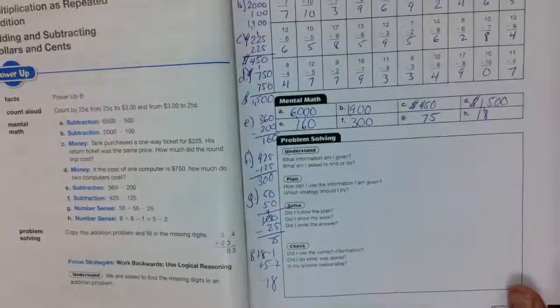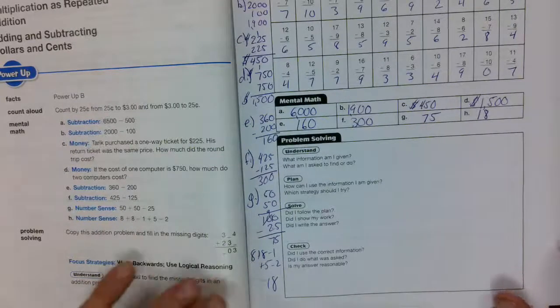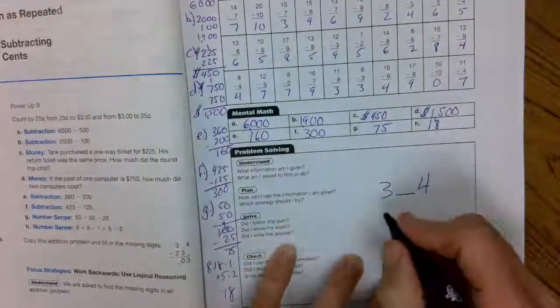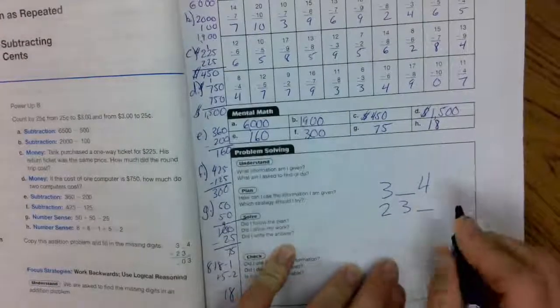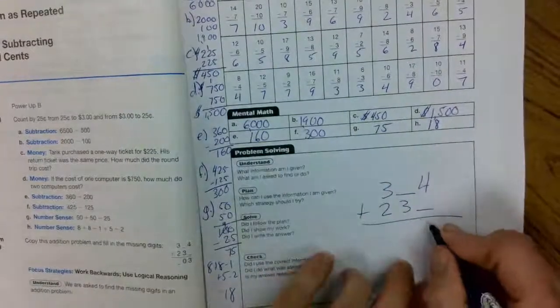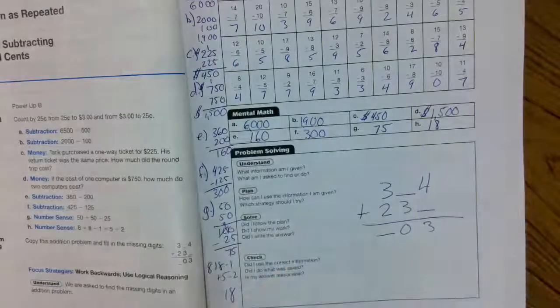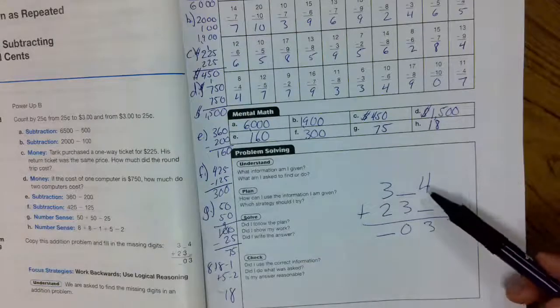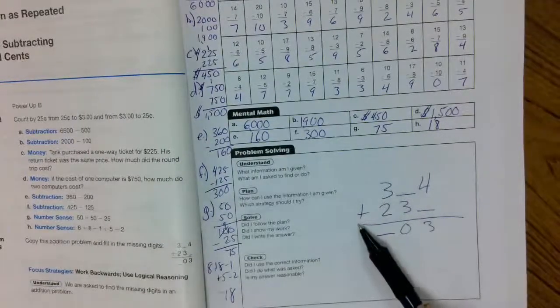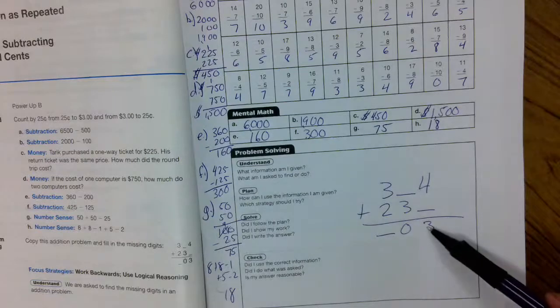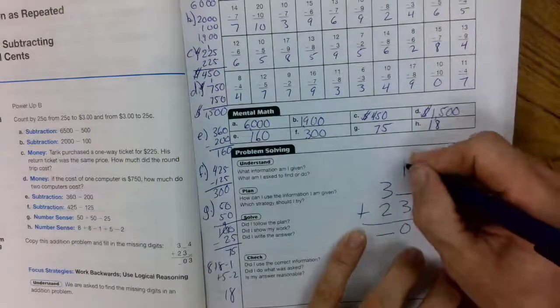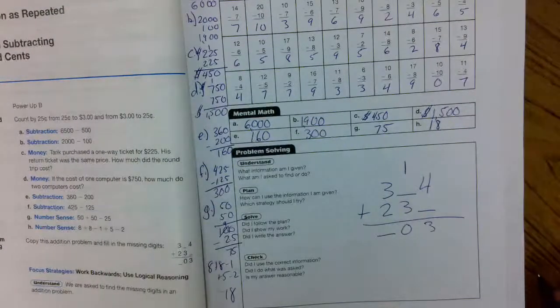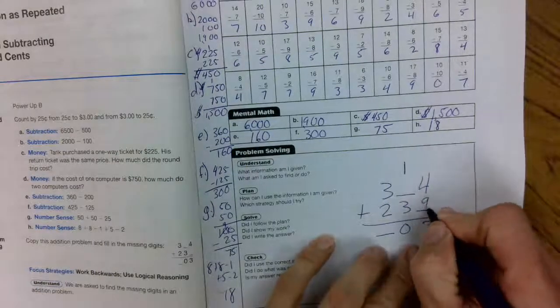Problem solving. Problem of the day. Copy this addition problem and fill in the digits. We've got some missing digits. 300 and something 4 plus 230 something equals something 0, 3. Now, you're saying to yourself, or at least I'm saying to myself, 4 plus some number is 3. Wait a minute. 4 minus 1 is 3. But this is an addition problem. So, we must have not a 3. We must have like a 13. So, let's have the regrouper up here and the answer is 13. So, 4 plus some number equals 13. 4 plus what equals 13? 4 plus 9 equals 13.